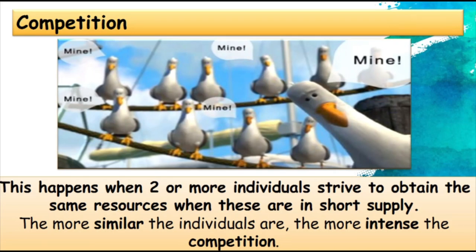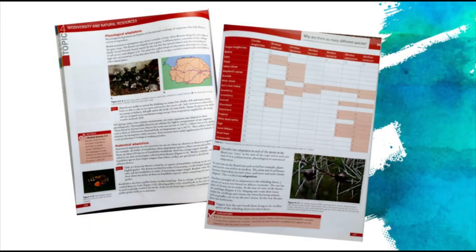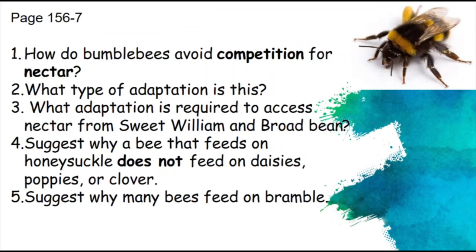I'm going to get you to answer a few questions using a textbook. I've scanned in the pages you need and they're available as a PDF on Moodle. Using pages 156 and 157, answer: How do bumblebees avoid competition for nectar? What type of adaptation is this? What adaptation is required to access nectar from sweetwilliam and broadbean? Suggest why a bee that feeds on honeysuckle does not feed on daisies, poppies, or clover. And suggest why many bees feed on bramble. Stop the video and answer the questions.